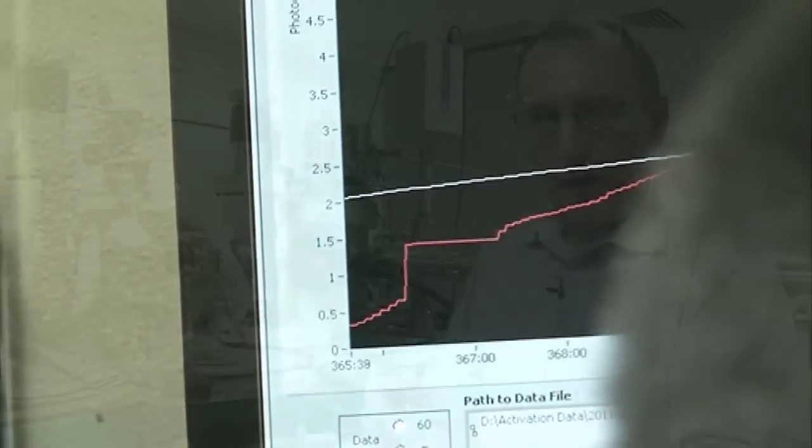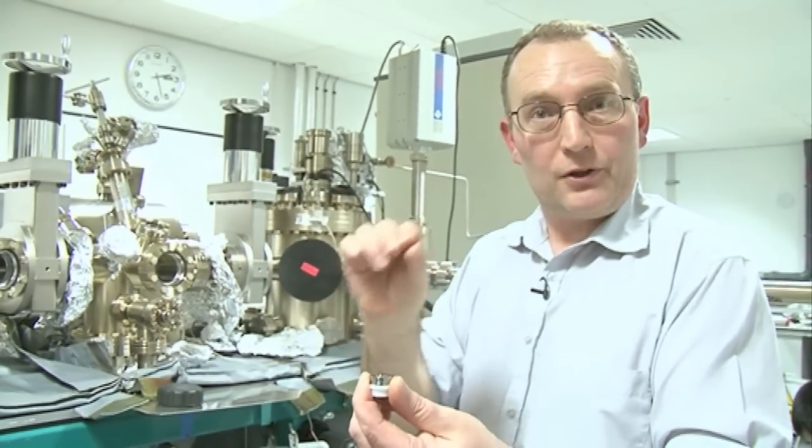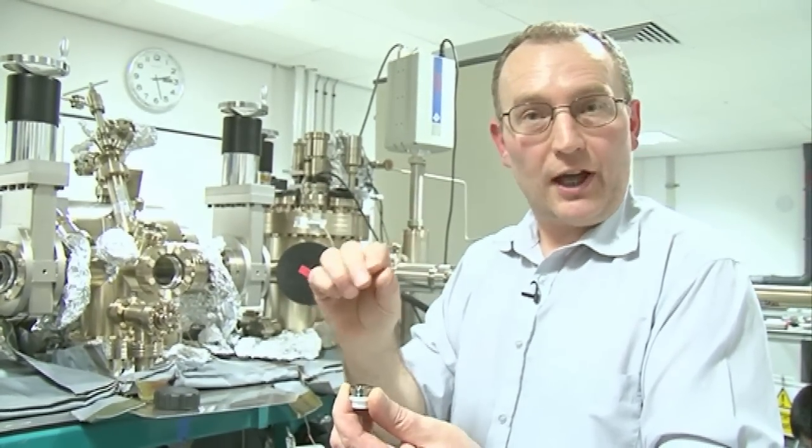And as the efficiency rises above zero, we start to get some efficiency, then this cathode will start to emit some electrons. And we can measure that emitted current.